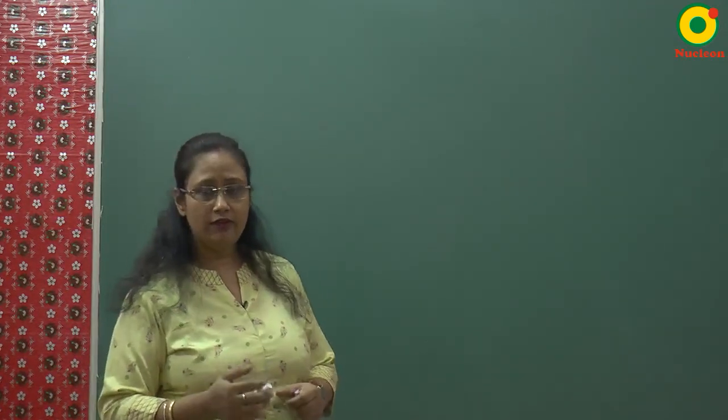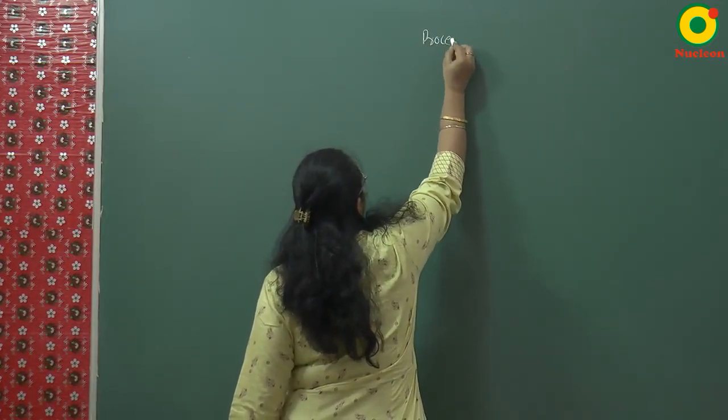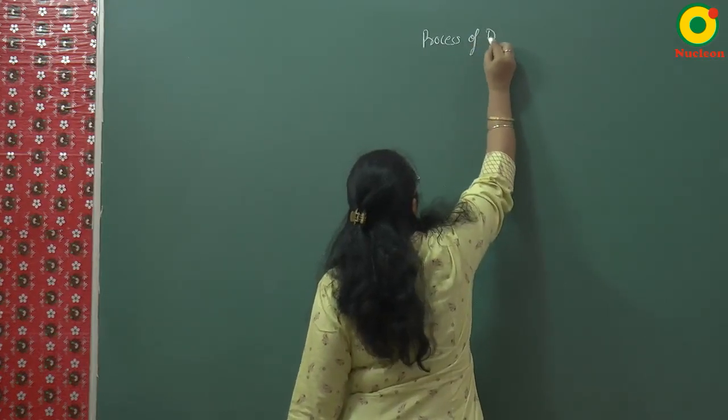Hello students. In the last lectures we have discussed about the structure of the alimentary canal or the digestive system. We have discussed about the digestive glands which play a very essential role in the process of digestion. We have also discussed the wall layers present in the alimentary canal. Now I am going to discuss the process of digestion in detail.